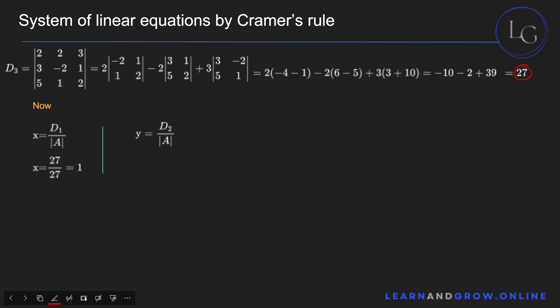For Y, you divide D2 by the determinant of A, because in D2 you replaced the Y column with the constants. So Y equals 0 divided by 27, giving Y equal to 0. Similarly, for Z, you divide D3 by the determinant of A: 27 divided by 27 gives Z equal to 1. That's Cramer's Rule.